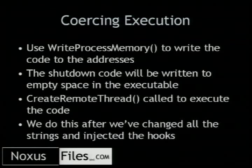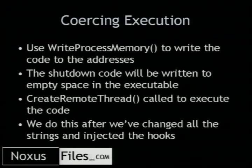This shutdown code — remember, if you pass it a parameter of four, it shuts the firewall off. I went through the executable and found slack space to write it into, so it's going to be pretty reliable. We don't need to make it position-independent in this case, because I picked a static address and it's worked. Then we run CreateRemoteThread — it does what it says, creates a remote thread. You pass it the starting address of where you want to start your code and it'll run it. Just running code in other applications — it's awesome. We do this after we've changed all the strings and injected the hooks on DrawText.